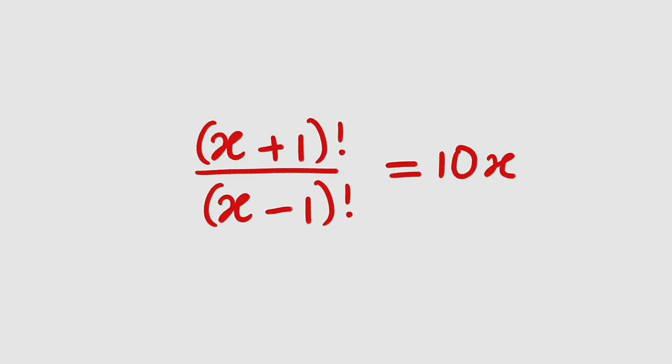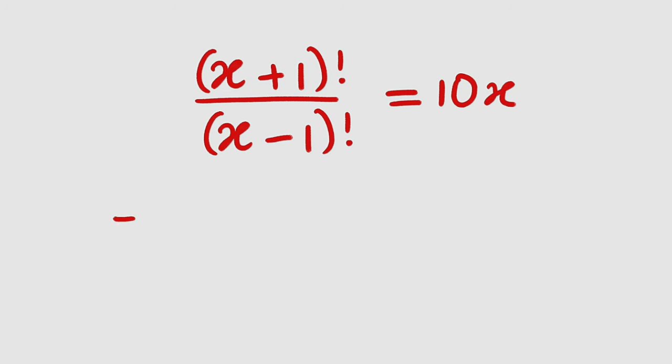Remember if you have 5 factorial, this is written as 5 multiplied by the next number which is 4 multiplied by 3 multiplied by 2 down to 1. This is what 5 factorial means.